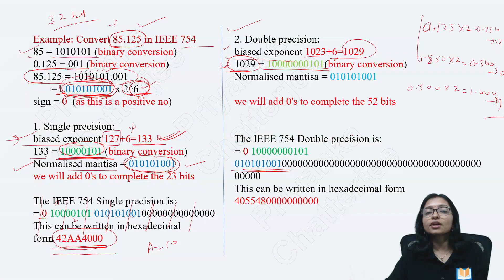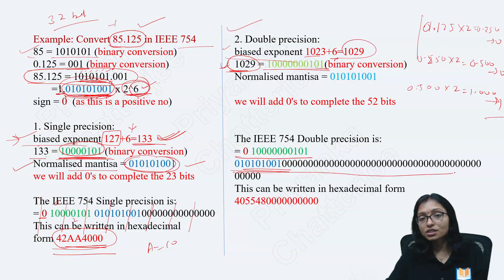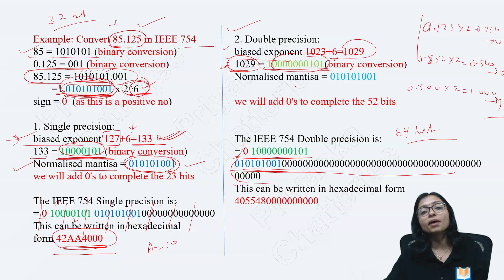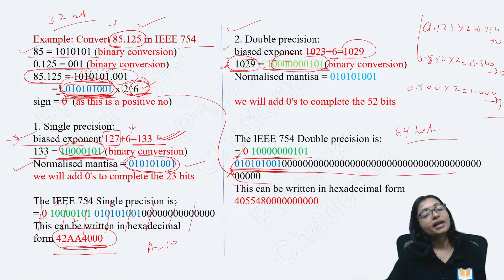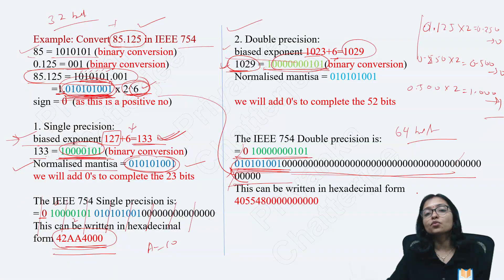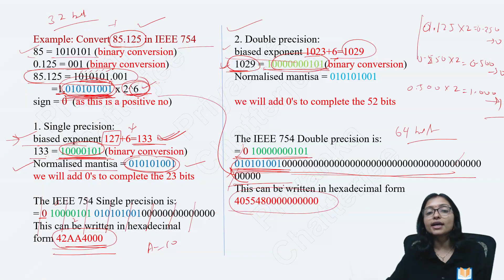So after that, finally when you write in double precision, you get this number. Because there was not enough space, these 3 lines are your total number. It is 64-bit representation. First you write the green color — that is the exponent part. After that the blue color — same blue color is the mantissa part. Then you add zeros to complete the 64 bits. After that, divide into 4-bit groups and represent in hexadecimal. This is your hexadecimal number.